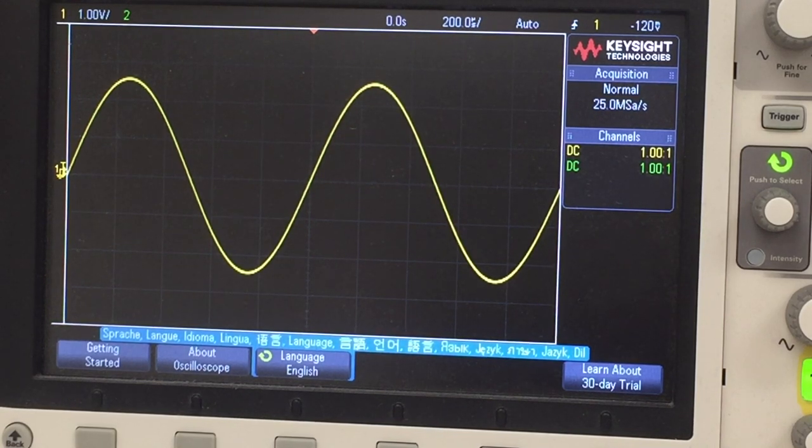So we know that the period of this signal should be 1 ms, which is 5 times 200 microseconds. So our period should be 5 grids.